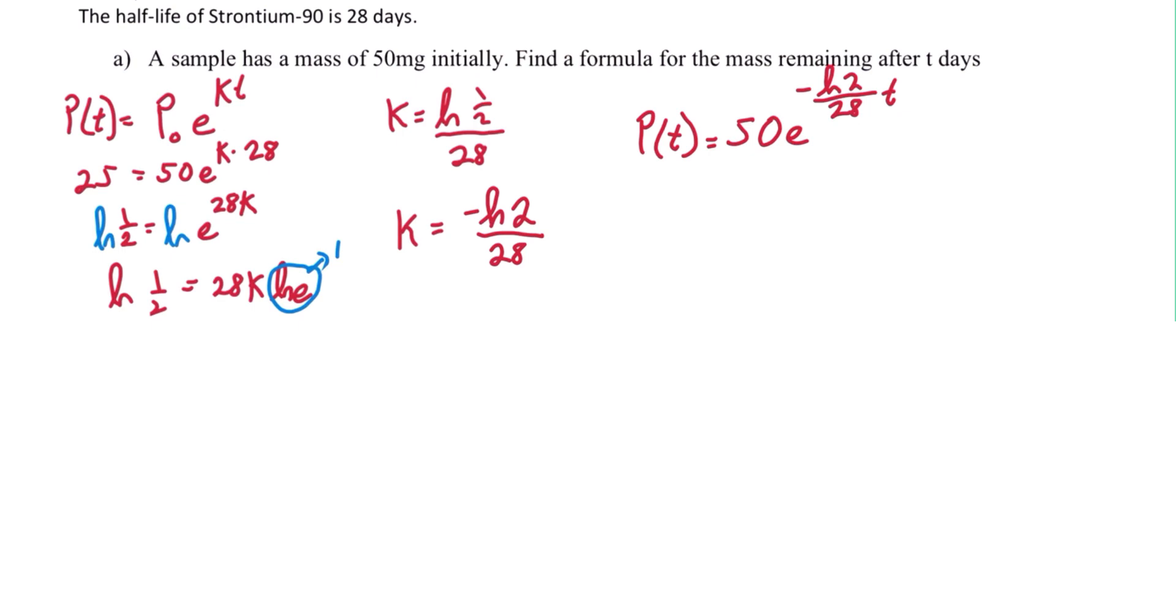Using log rules, once again, we can rewrite this a little bit simpler as 50 times 2 to the negative 1 over 28 t.